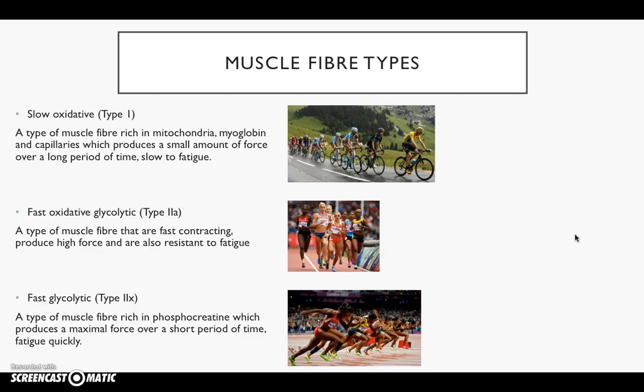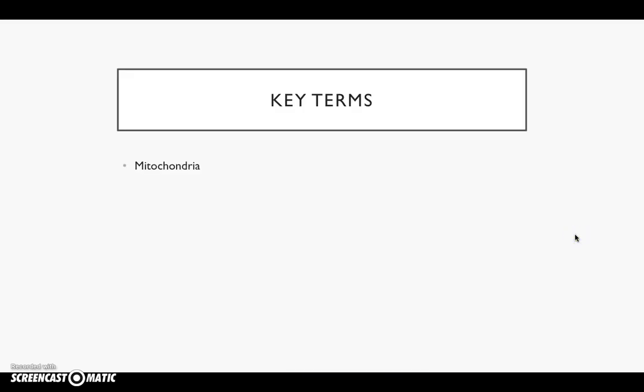Those are the muscle fibre types. Finally, a key term: mitochondria. Mitochondria is a structure in the sarcoplasm responsible for aerobic energy production. Hence why there are plenty of mitochondria in a slow twitch muscle fibre, but they are not found in fast glycolytic muscle fibres — because fast glycolytic fibres do anaerobic work and do not work with oxygen. If you could get those down, I'll see you in lesson on Thursday. Thank you.